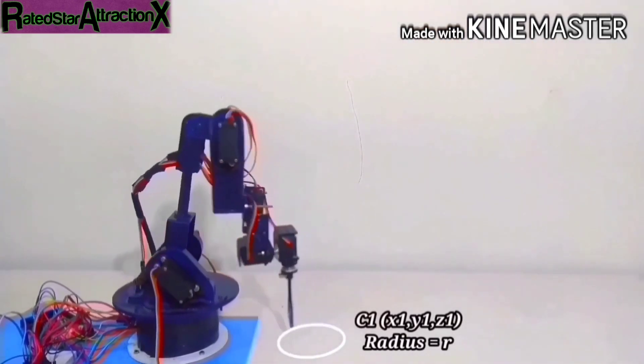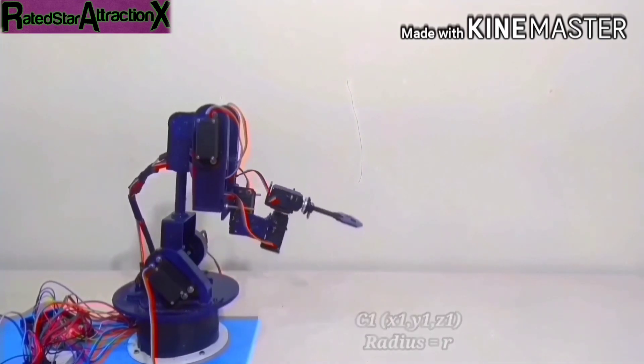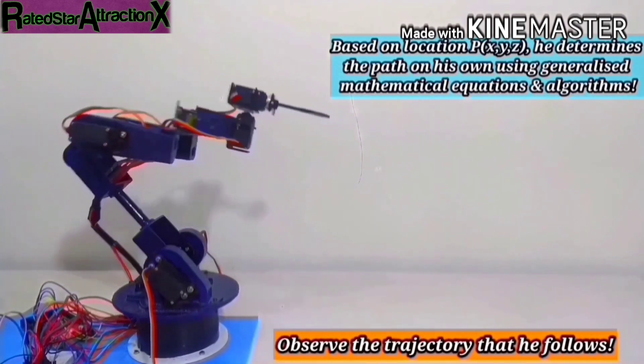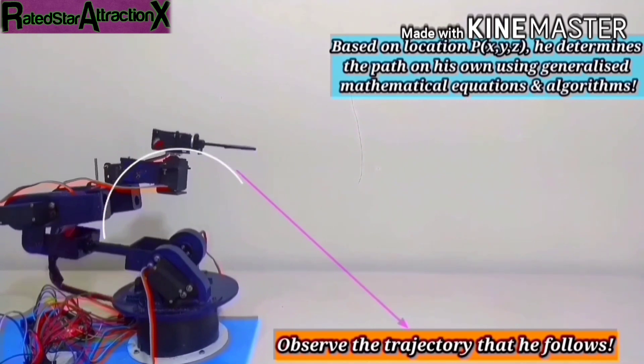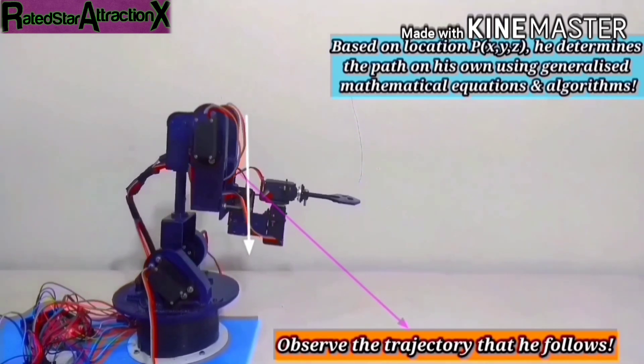Inspired from Spot, this arm can also do the same thing. All you need to do is just tell the robot about the center's coordinates, the radius, parametric angle theta, and the number of revolutions.